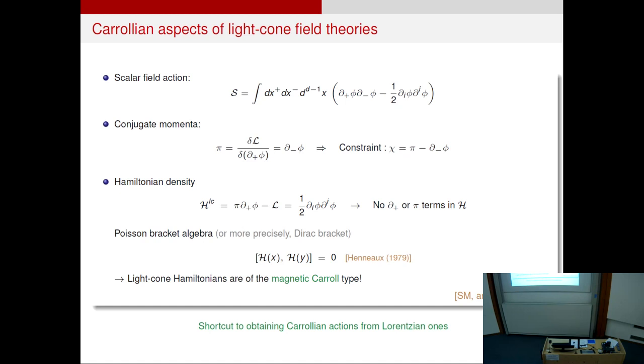So if you just focus on the scalar field action in light cone coordinates and look at the conjugate momenta, you'll immediately see that this is a constraint because it's a first order in time derivative. And if you compute the Hamiltonian density for this scalar field action, we find that there are no del plus or pi terms in the Hamiltonian action. And this is a feature of Carrollian Hamiltonian actions. Furthermore, you can prove that the Poisson bracket algebra with this Hamiltonian densities are zero. Crucially, for Lorentzian spacetime, this is non-zero. But for Carrollian spacetime, this must be zero. So this tells us that light cone Hamiltonians derived in this way are typically Carrollian. So this sort of gives us a shortcut to obtaining Carrollian field theories from Lorentzian ones.